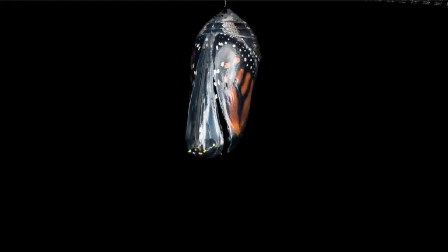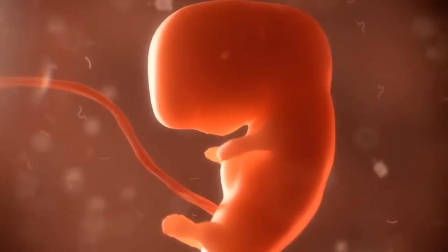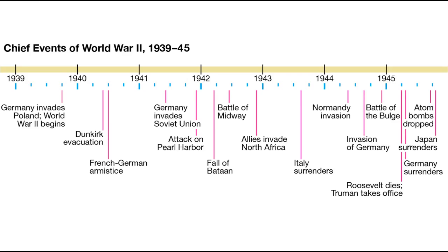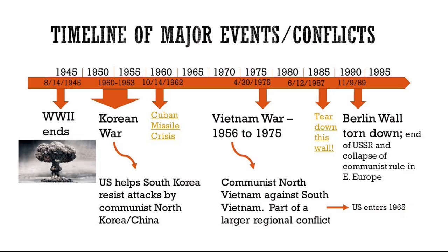Chronological order is a way of arranging actions, events or things according to the time they occurred. It is demonstrated by showing what happened first, what went on next, what came about in the succeeding occurrences, and until what took place last. This manner of presentation is also called time or linear order.